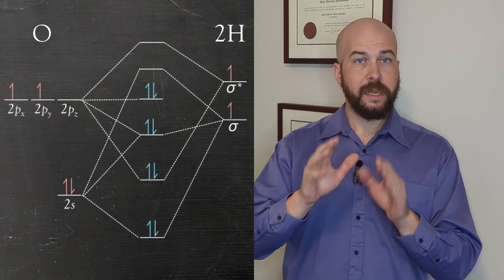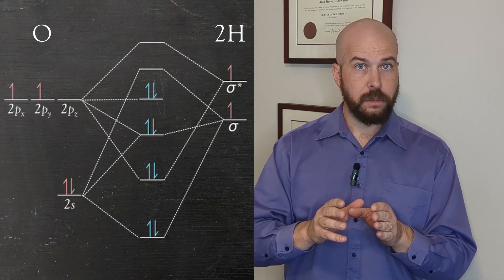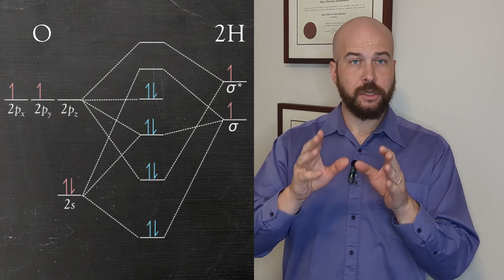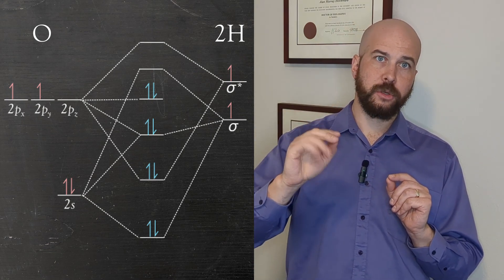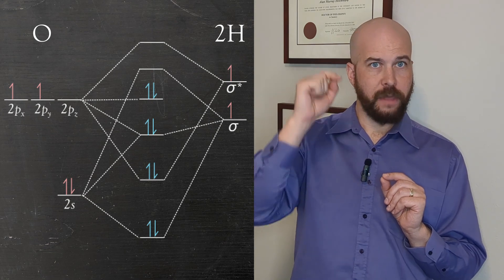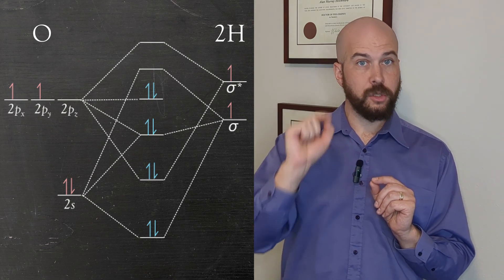Finally the px orbital cannot mix with the hydrogen orbitals electrons because there is no way for the symmetry to line up correctly. So that will have to just carry over as a non-bonding orbital. Now let's put in our electrons. We have eight to go in so we fill from the bottom towards the top. So our final two go into that non-bonding orbital we just talked about.